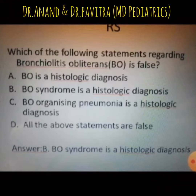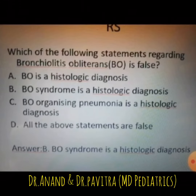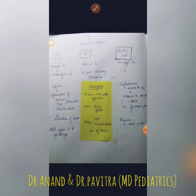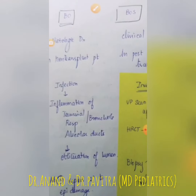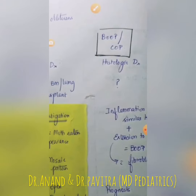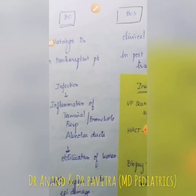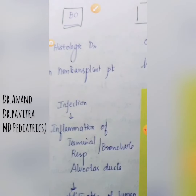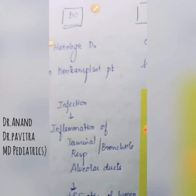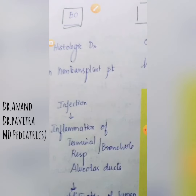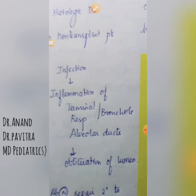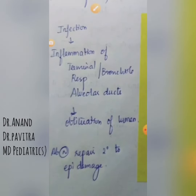Bronchiolitis obliterans syndrome is a histologic diagnosis. To understand the difference between these terms, let us see the explanation. There are three to four terms: bronchiolitis obliterans, bronchiolitis obliterans syndrome, and bronchiolitis obliterans organizing pneumonia or cryptogenic organizing pneumonia — both of them mean the same. Bronchiolitis obliterans is basically a histologic diagnosis in a non-transplant patient. It is generally secondary to infection or inflammation of the terminal respiratory bronchioles and alveolar ducts, causing obliteration of the lumen. There is abnormal repair secondary to epithelial damage.